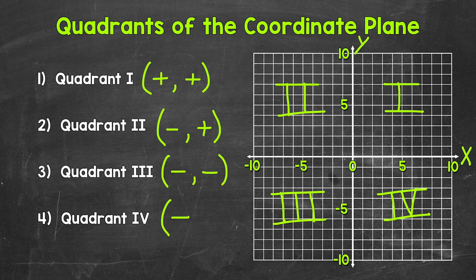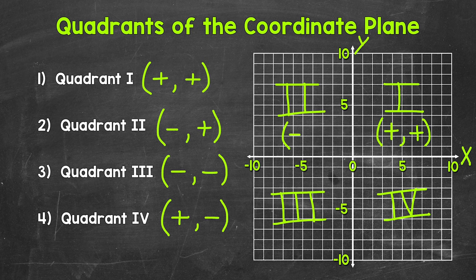So there you have it — those are the four quadrants of the coordinate plane. Just for a quick review: for quadrant 1, x-coordinates are positive and y-coordinates are positive. For quadrant 2, x-coordinates are negative and y-coordinates are positive. For quadrant 3, x-coordinates are negative and y-coordinates are negative. For quadrant 4, x-coordinates are positive and y-coordinates are negative.